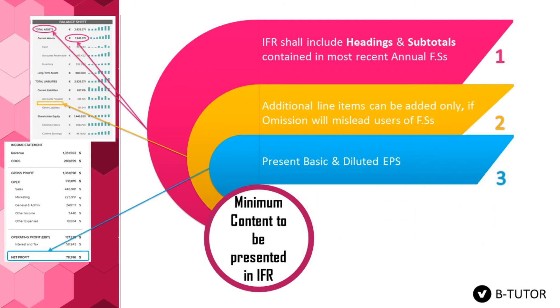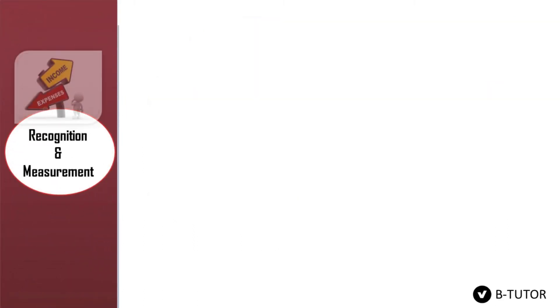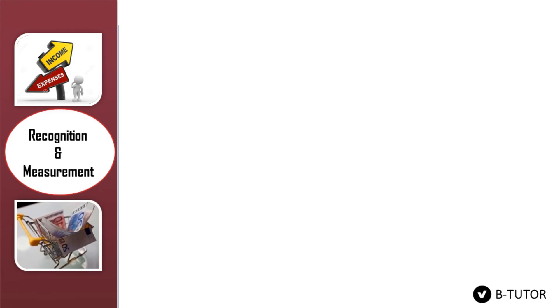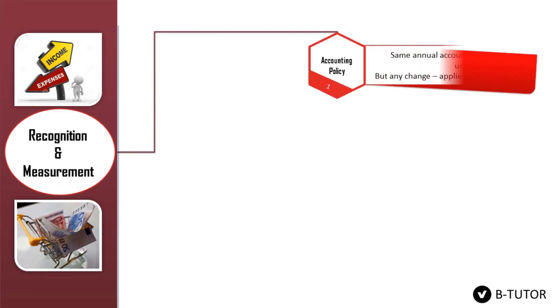The last point of minimum content is to present the basic and diluted earnings per share after computing profit after tax. Now here comes the most important topic of this IAS — how to recognize and measure items during an interim period. Number one: accounting policies. The same annual accounting policies are used in interim periods as well, but any change in accounting policies must be applied retrospectively.